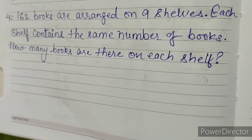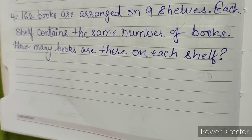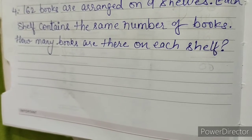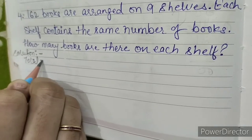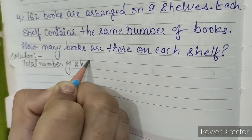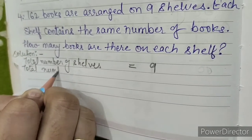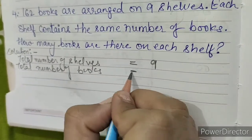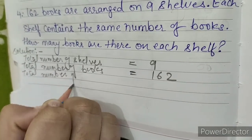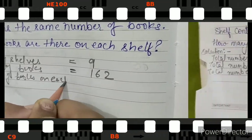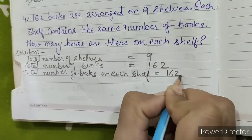Question number 4. 162 books are arranged on 9 shelves. Each shelf contains the same number of books. How many books are there on each shelf? Solution. Total number of shelves equals 9. Total number of books equals 162. Total number of books on each shelf equals 162 divided by 9.